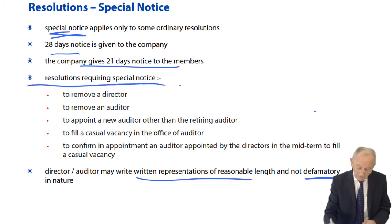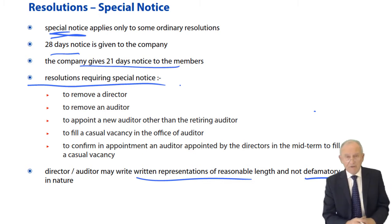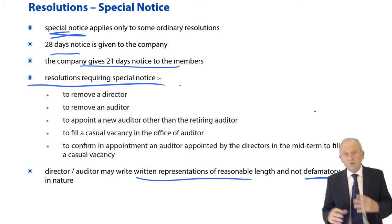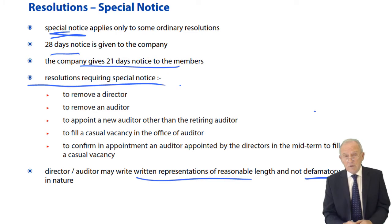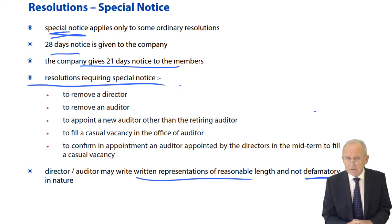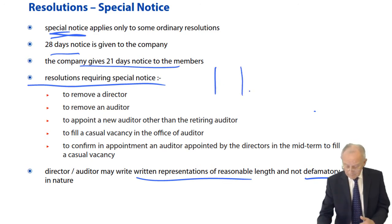Here are the five resolutions requiring special notice. The first is to remove a director before the expiration of his term of office. Directors, if they're not FTSE 350 companies, are typically appointed for a three-year period, and then every year a third of the directors will retire by rotation.